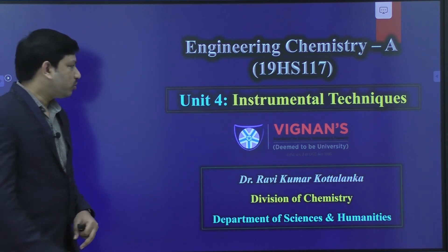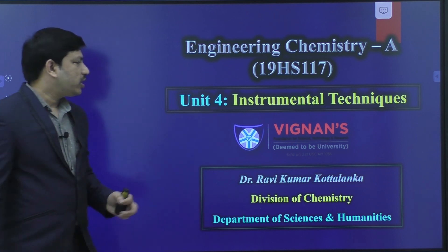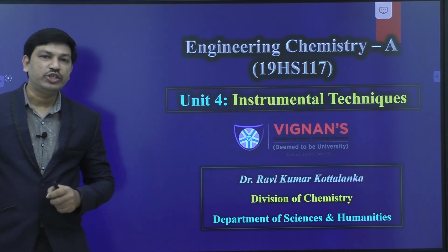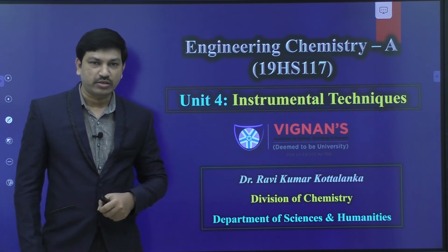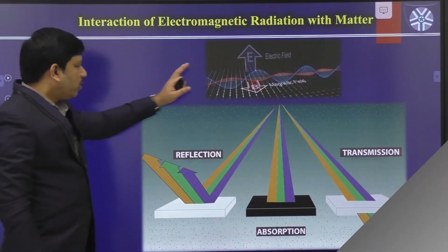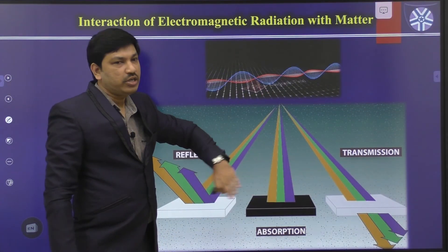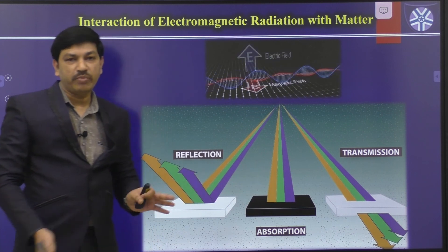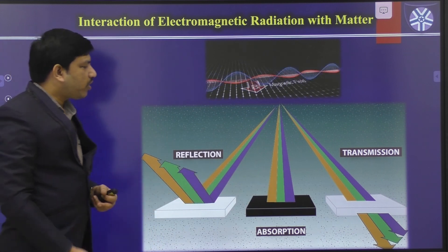In this fourth unit, we are going to discuss some of the important instrumental techniques for chemical analysis. Whenever electromagnetic radiation is sent toward an unknown matter, certain things happen.